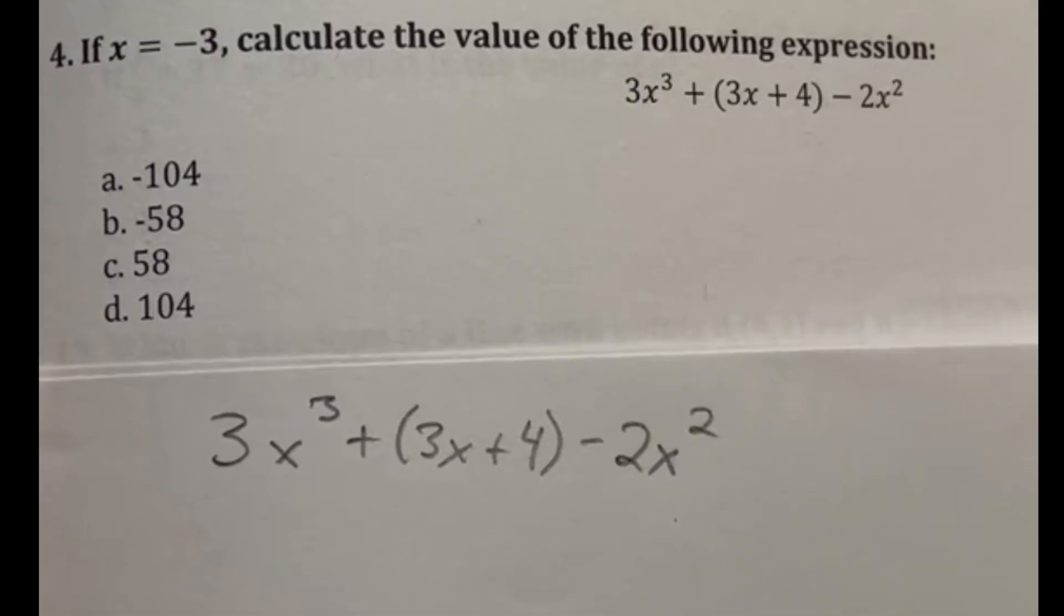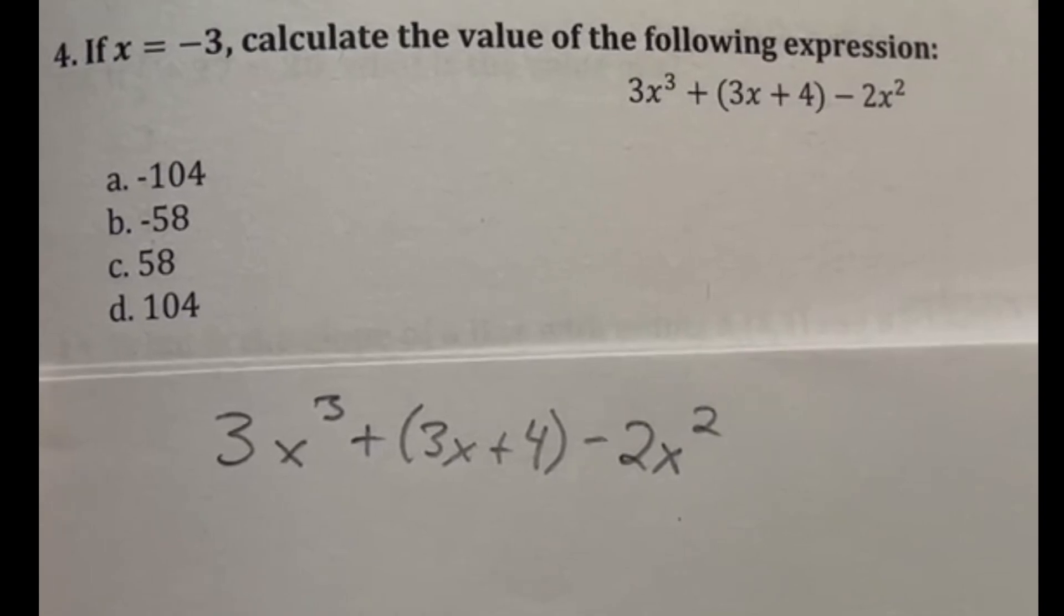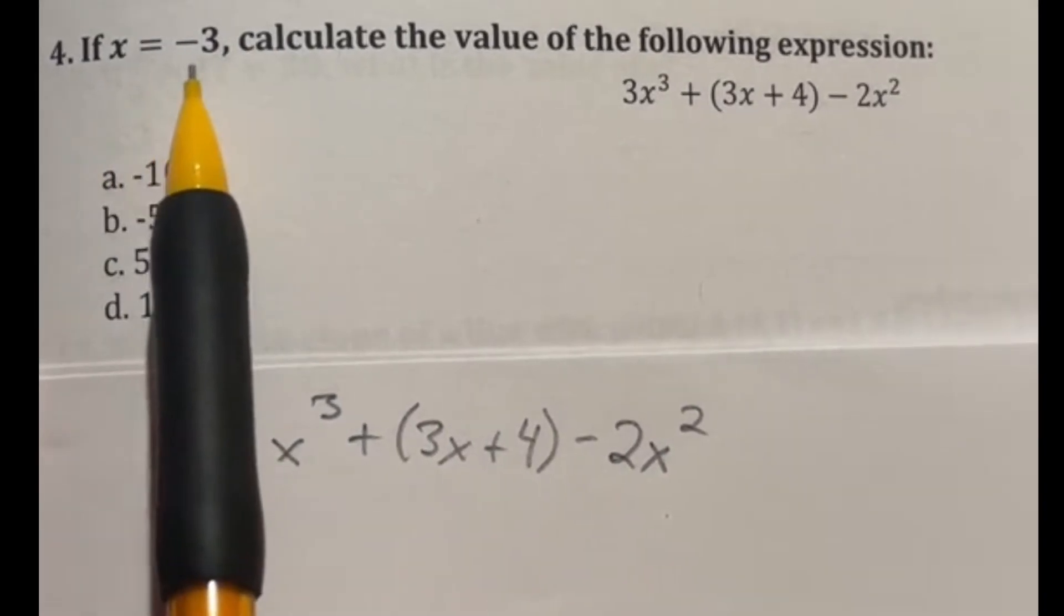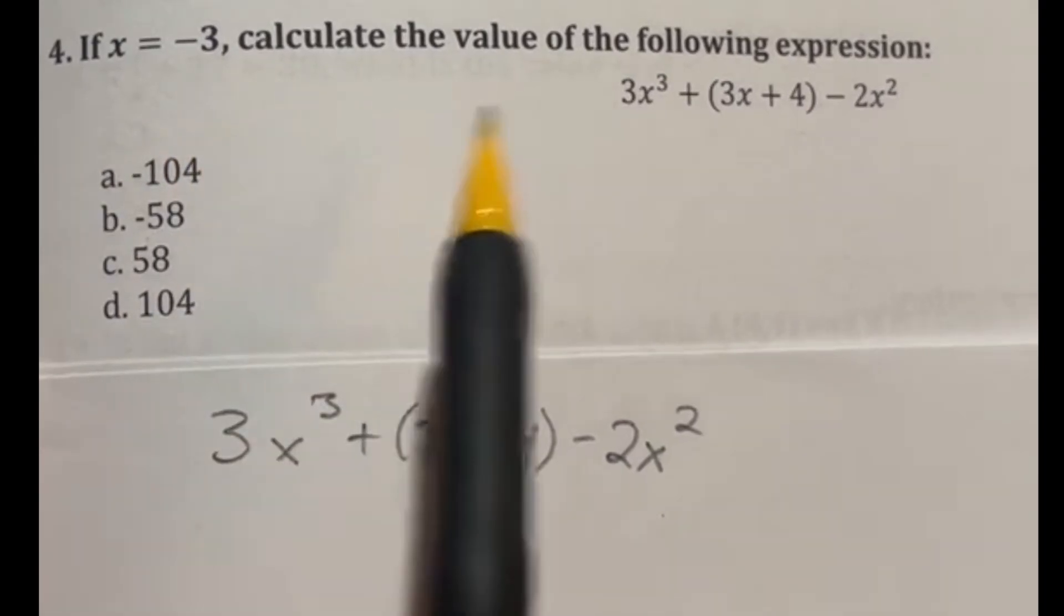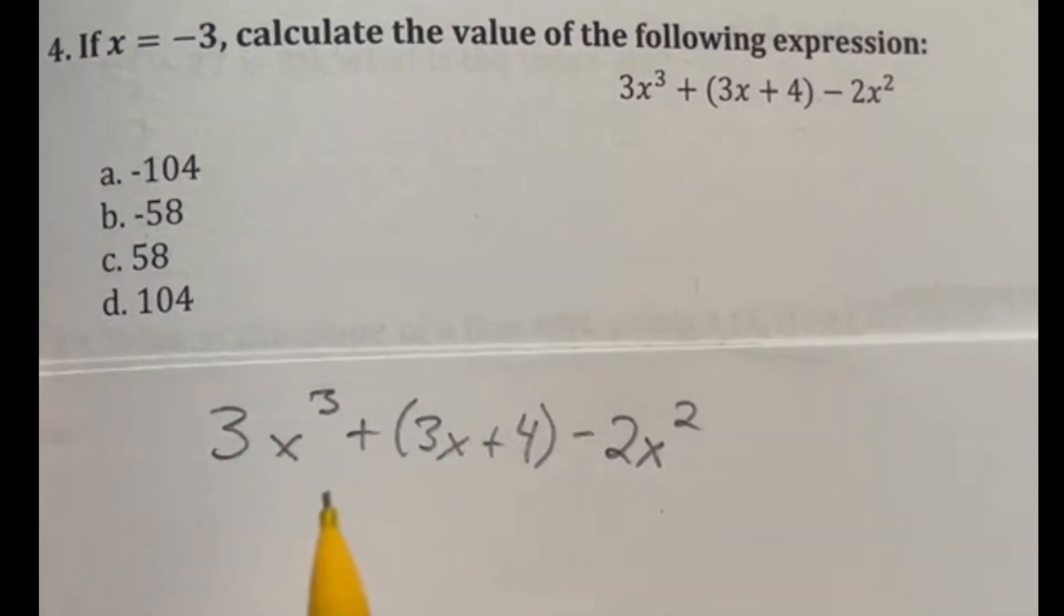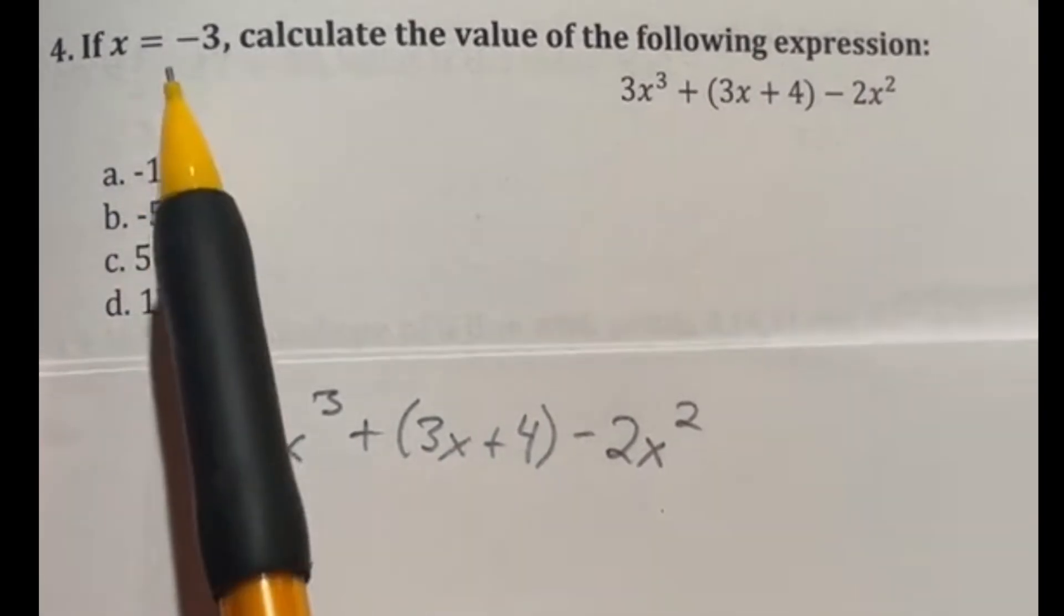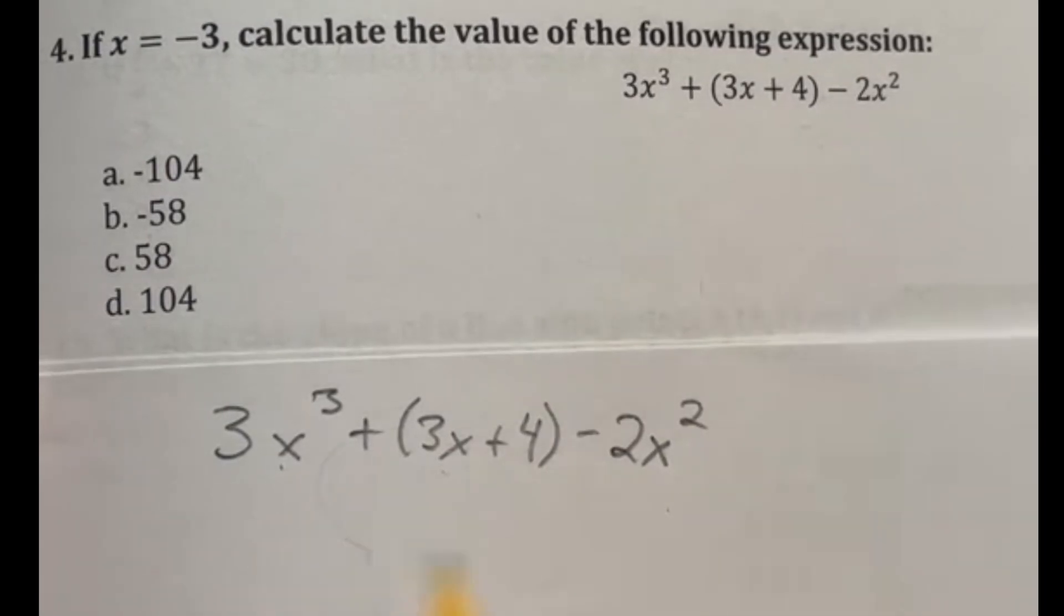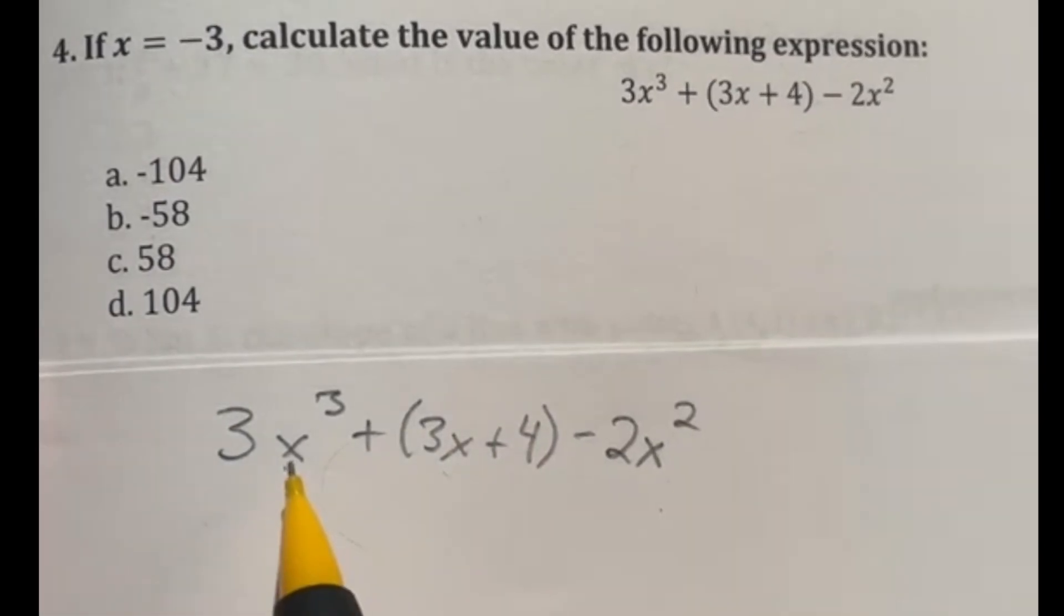So for number four on the ASVAB here with this little practice test, we're going to do some plug and chug here. It says if x is -3, calculate the value of the following expression. Now I wrote it again down here so that we can be a little bit more centered. But essentially, what they're asking you to do is just take this -3 and plug it in every time you see an x to solve this equation.